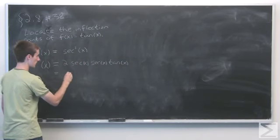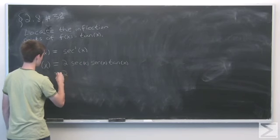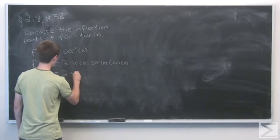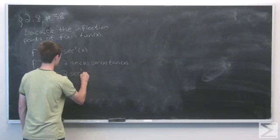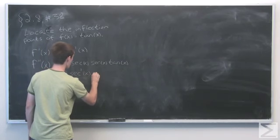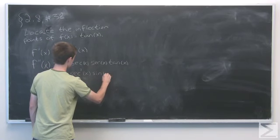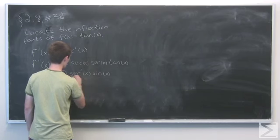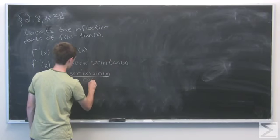But of course, tangent of x is sine over cosine. So we can write this as 2 secant squared of x times sine of x all over cosine of x.